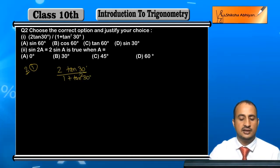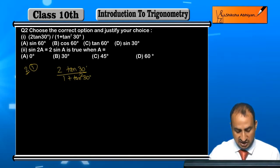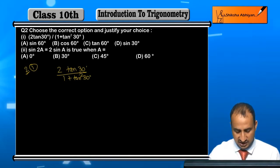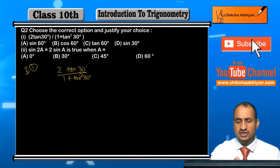Now students, first of all we have to tell what this equals. Option a) sin60°, option b) cos60°, option c) tan60°, or option d) sin30°. So let's first find the value of this expression.